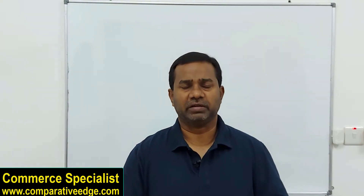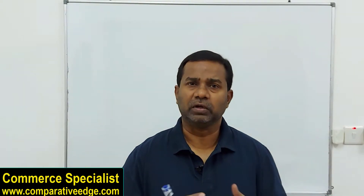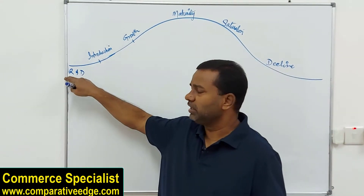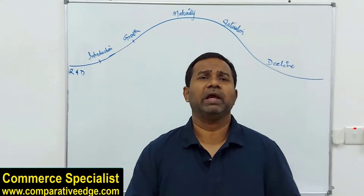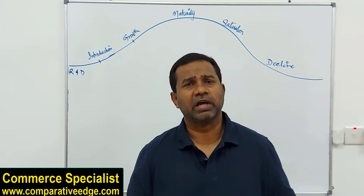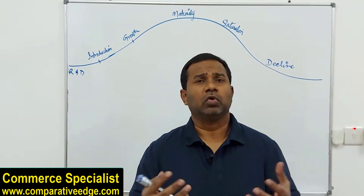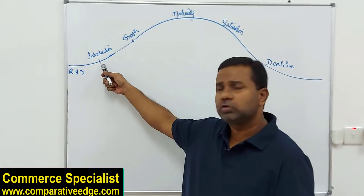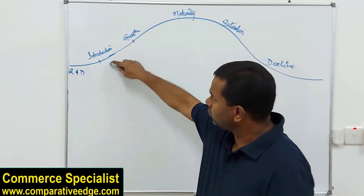Similarly, we have a business life cycle or product life cycle. If you look at the life cycle of a product, the first stage is R&D — Research and Development — where the company is trying to find out what to make, how to make it, and what customers would like. Just like pharmaceutical companies currently in R&D for the COVID-19 vaccine. Once R&D is complete, the product is launched into the market — we call it the introduction phase. If the product is successful, sales go up — we call it the growth stage.